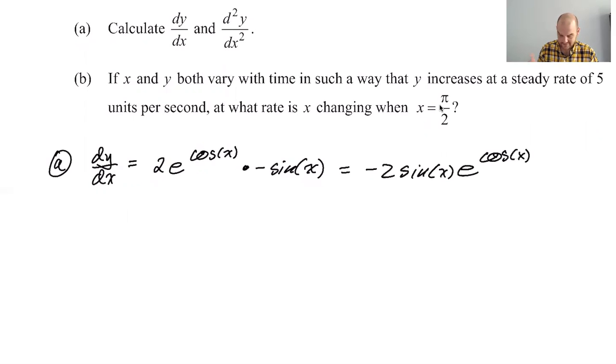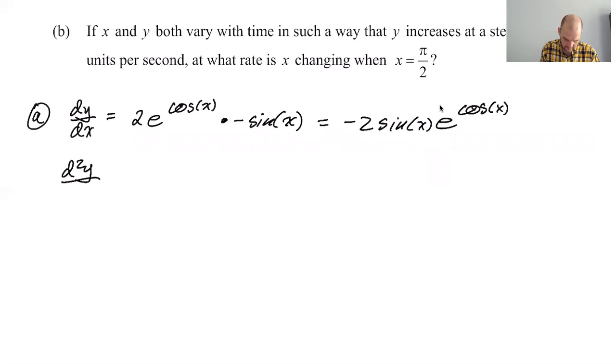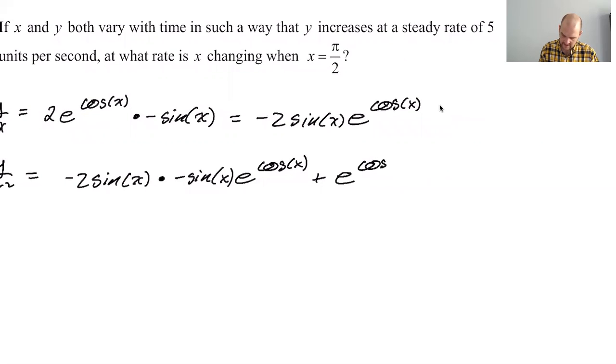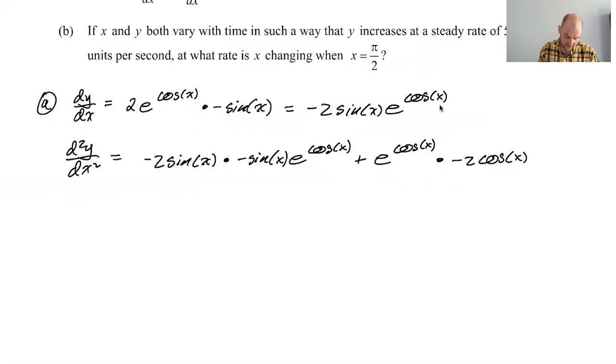Let's find the second derivative. So the second derivative is going to be first, which I'm going to treat as negative 2 sine of x, derivative of the second. The derivative of e to the cosine of x we know is negative sine of x e to the cosine of x because we just found that. Times negative sine of x e to the cosine of x, that's first times the second. Plus second, which is e to the cosine of x, derivative of the first. The derivative of negative 2 sine of x is negative 2 cosine of x.